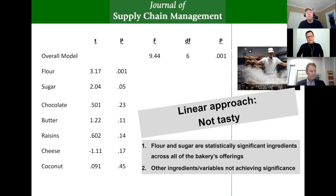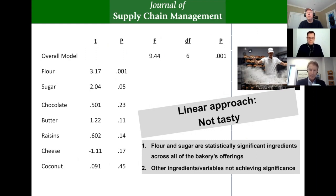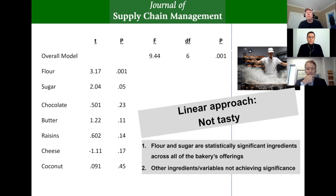On the next slide, we see how this would be treated if we were to look at a linear approach. A linear approach would try to identify relationships between an individual ingredient — the independent variable — and tastiness, the dependent variable, holding all other ingredients constant, with some interdependencies potentially being modeled as interaction terms. Based on those results, we would say that flour and sugar are significantly positively correlated to tastiness.